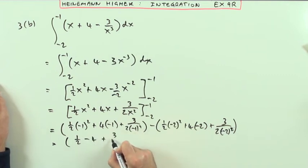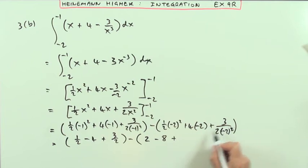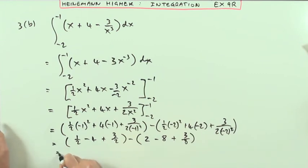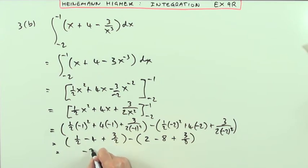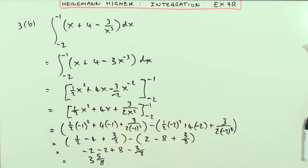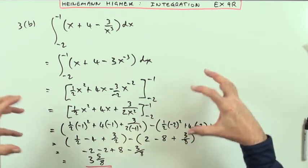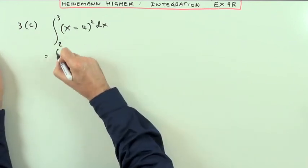Working it out: that's a half, minus 4, plus 3 over 2, then a half of 4 is 2, minus 8, plus 3 over 8. The half and 3 over 2 give 4 over 2 which is 2, and negative 4 makes that negative 2. So negative 2 take away 2 plus 8 minus 3 eighths — that's 4 minus 3 eighths, giving 3 and 5 eighths.